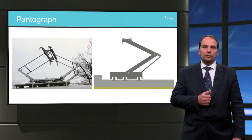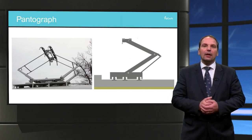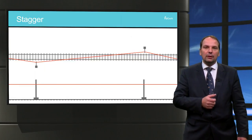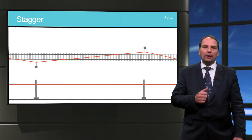For current day systems, the term pantograph is actually a misnomer as the actual pantograph shape is not used anymore. A lateral stagger motion is applied in all catenary structures in order to evenly wear the contact strips of the pantograph.